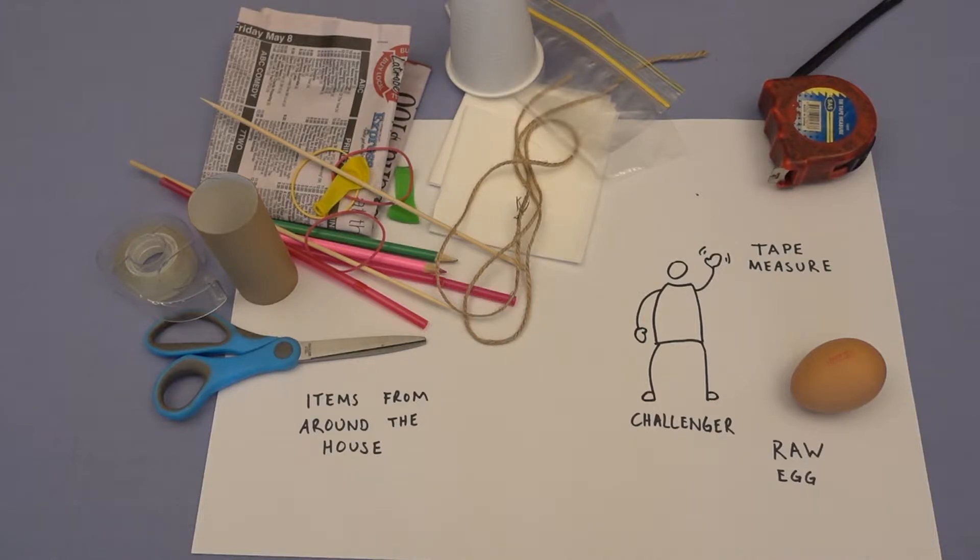Once you've done that, it's all about building. You can set yourself a limit, say 30 minutes to build your contraption, or you can just wait till everyone's ready and then test it out. It's entirely up to you how you run this competition, but consistency is the key. So I'm going to have a go at making a contraption for myself, then I'm going to see how high I can drop it from.